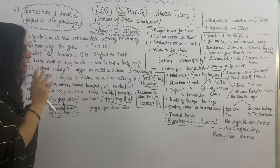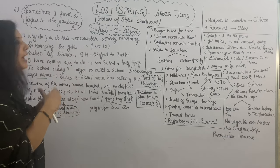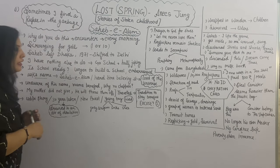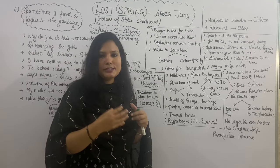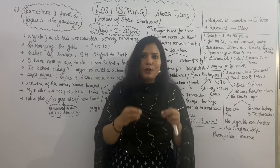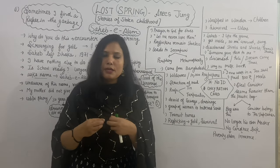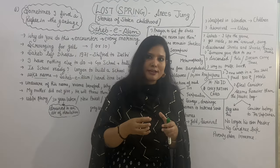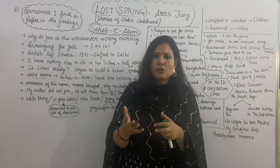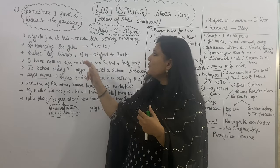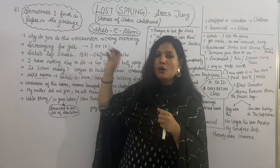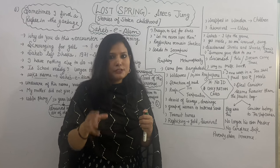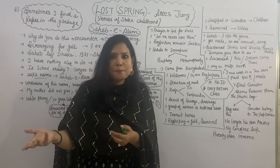The very first story is about Saheb-e-Alam and the title she has given is 'Sometimes I Find a Rupee in Garbage.' Saheb-e-Alam is a rag picker. Rag pickers are somebody who shuffles the garbage and picks up the valuable stuff — like a watch, cloth, shoes, anything — and that valuable stuff is referred to as gold. So rag pickers shuffle the garbage, pick up the valuable stuff, and put them into their rag. That's how they are rag pickers.